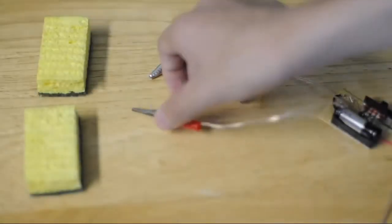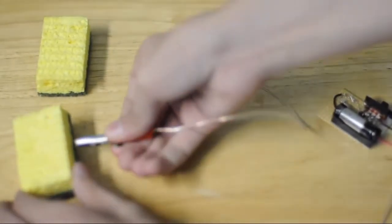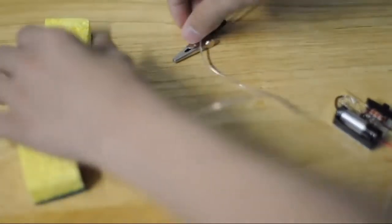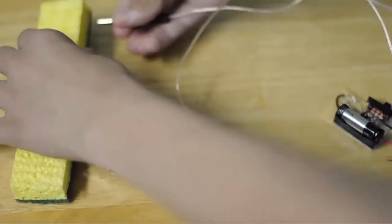Now that you have the wire attached to the alligator clip, all you need to do next is connect it to the sponge. Now make sure you do this very tightly so that the electricity actually transfers.